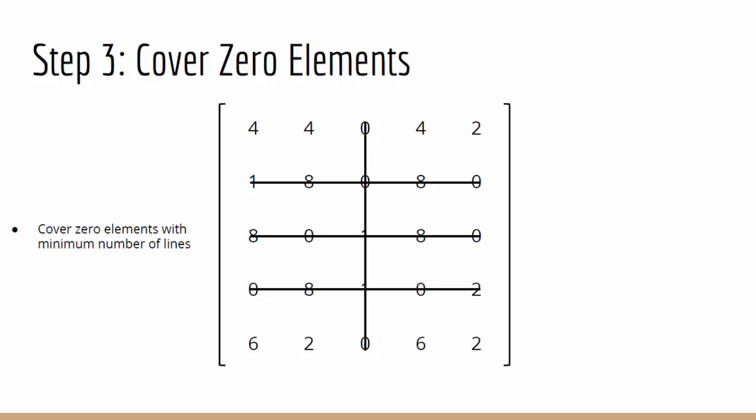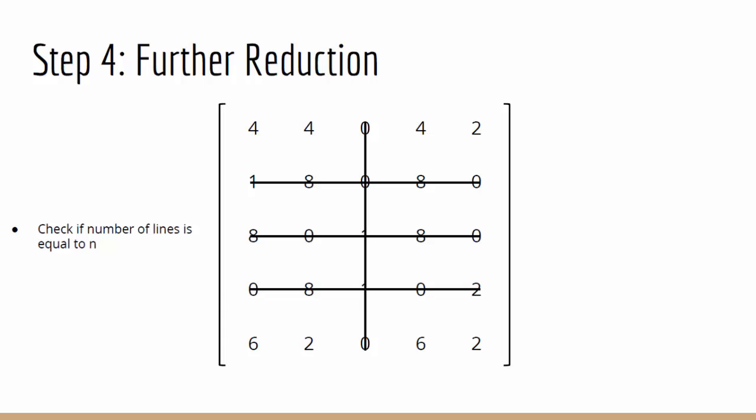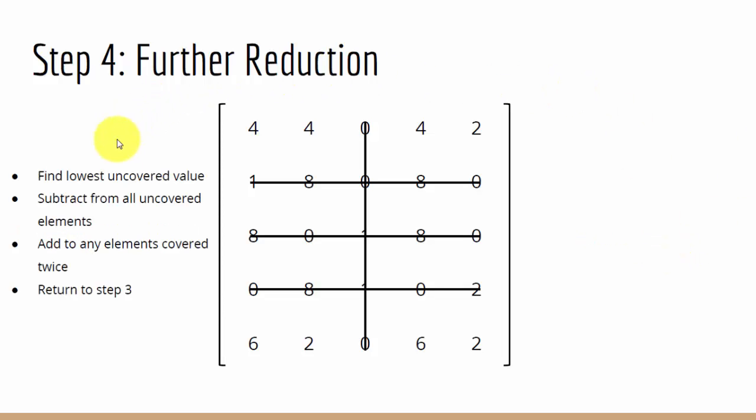Moving on to step 4 for the second time, we need to check whether the number of lines is equal to n, so 5. In our case, we have 4 lines but 5 rows, therefore we continue with the step. Now looking at the matrix, we can see that 2 is our lowest uncovered value.